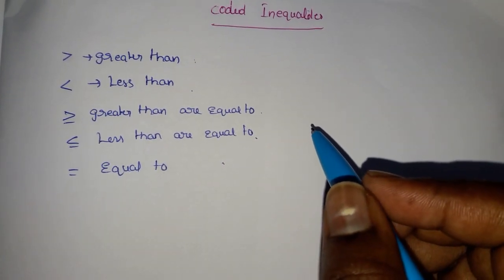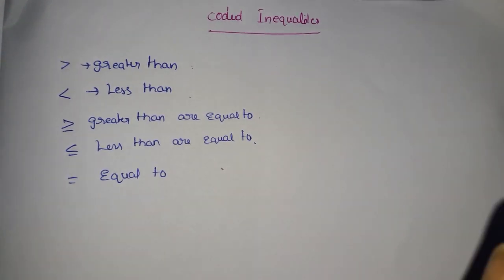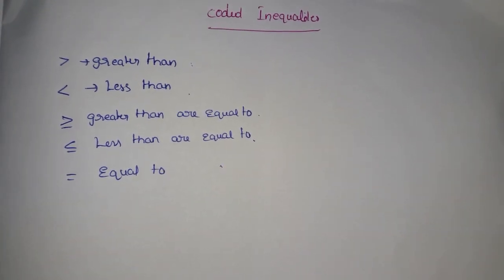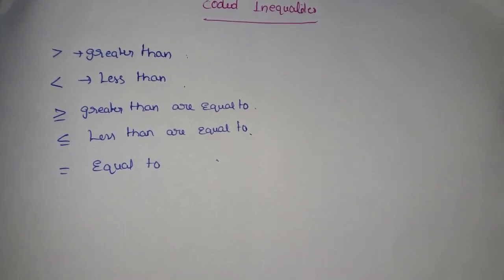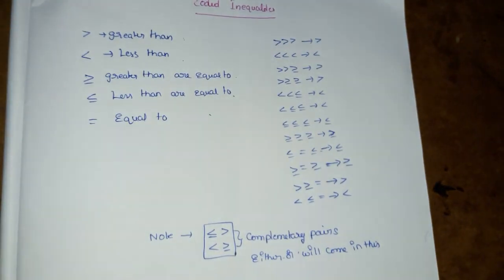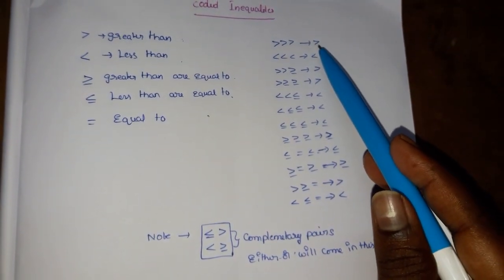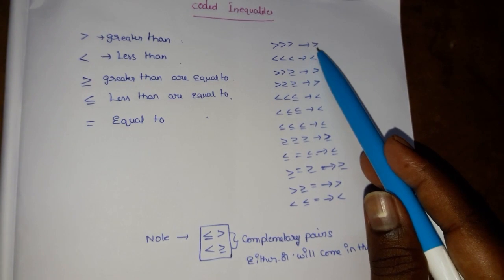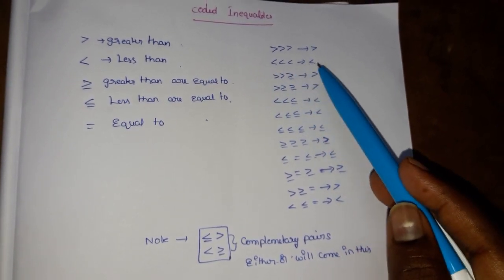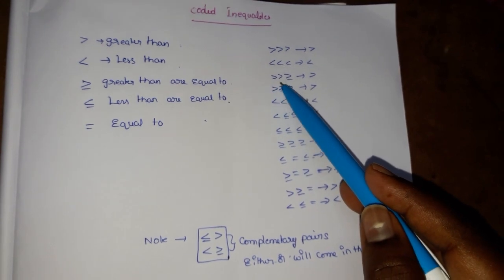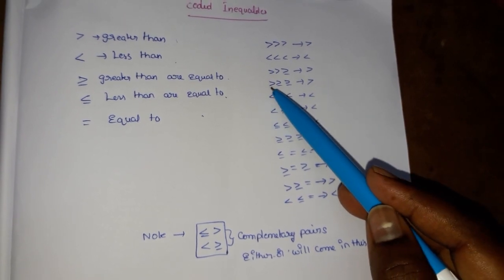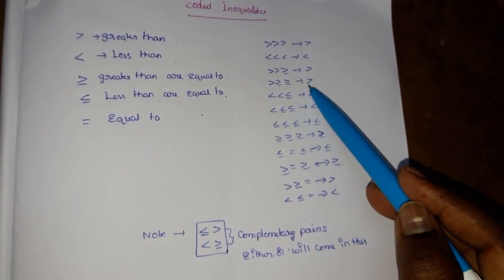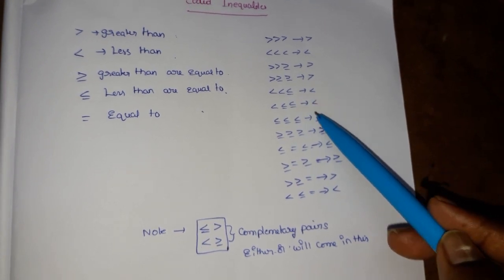In banking examinations this is a five marks problem. The rule is: greater than, greater than or equal to, greater than or equal to — the final result is greater than. So this is the rule.